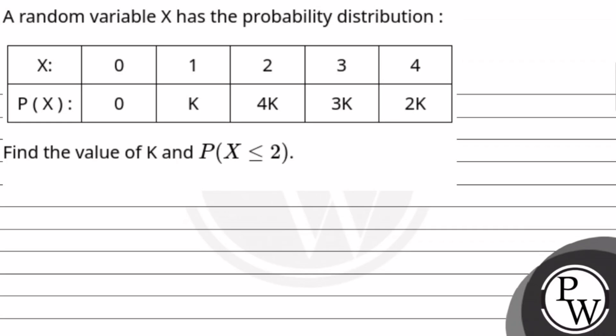Hello kids. Let's see today's question. The question says a random variable x has the probability distribution as follows. Find the value of k and p when x is less than or equal to 2. We have a probability distribution table.